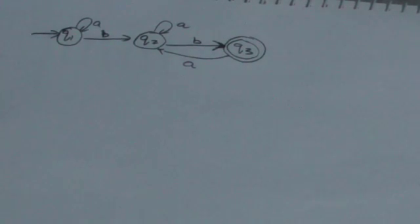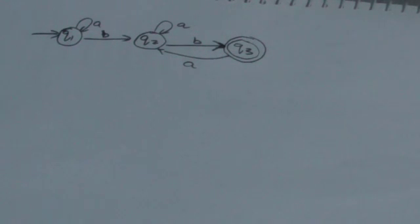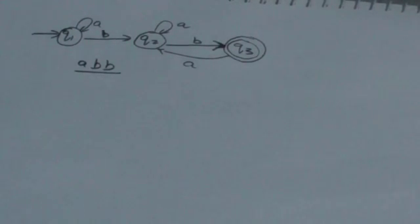Look at this automata: q1 is the initial state and q3 is the final state. There are only two input symbols, a and b. We have to find where the machine would be after reading the input string 'abb'.